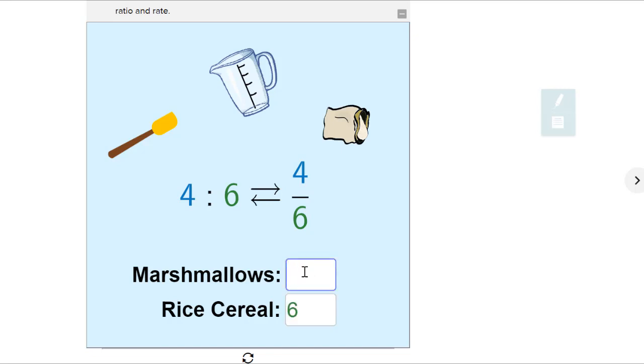Now what if our marshmallows to rice ratio is 9 to 12? Again, we see our marshmallows, the first number given, goes to the numerator and the second number given for rice cereal goes to the denominator. Great work.